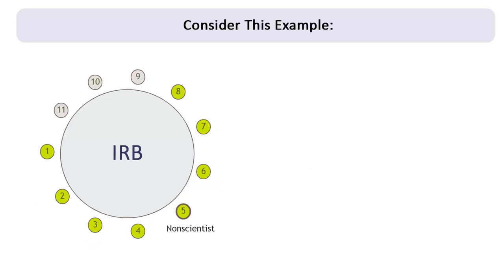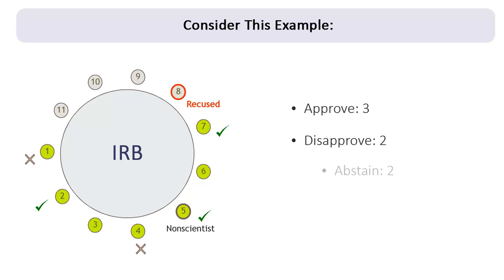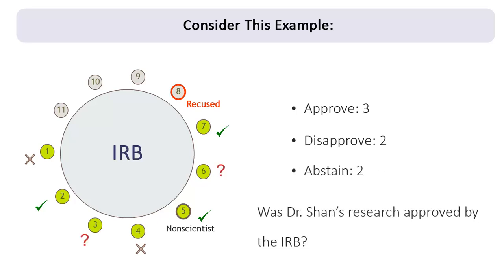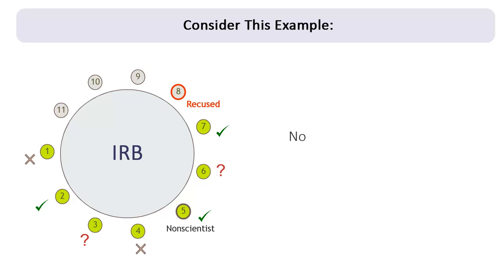This was how the convened IRB, without Dr. Shan, voted: Approve, three. Disapprove, two. Abstain, two. Was Dr. Shan's research approved by the IRB? No. Even though there were more approvals than disapprovals, Dr. Shan's research couldn't be approved, because it was not approved by at least four of the seven members present at the meeting—or a majority of those present.